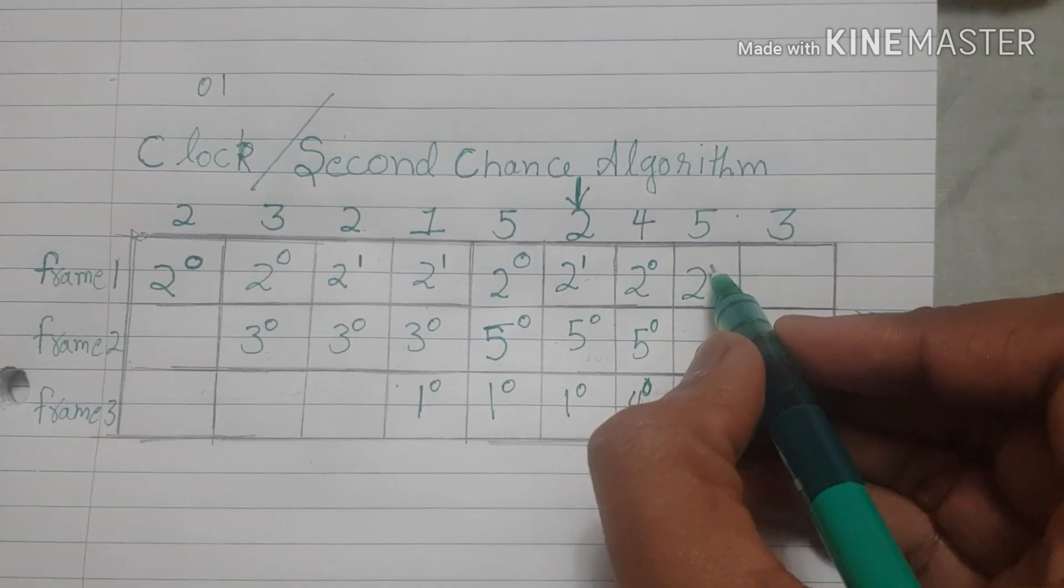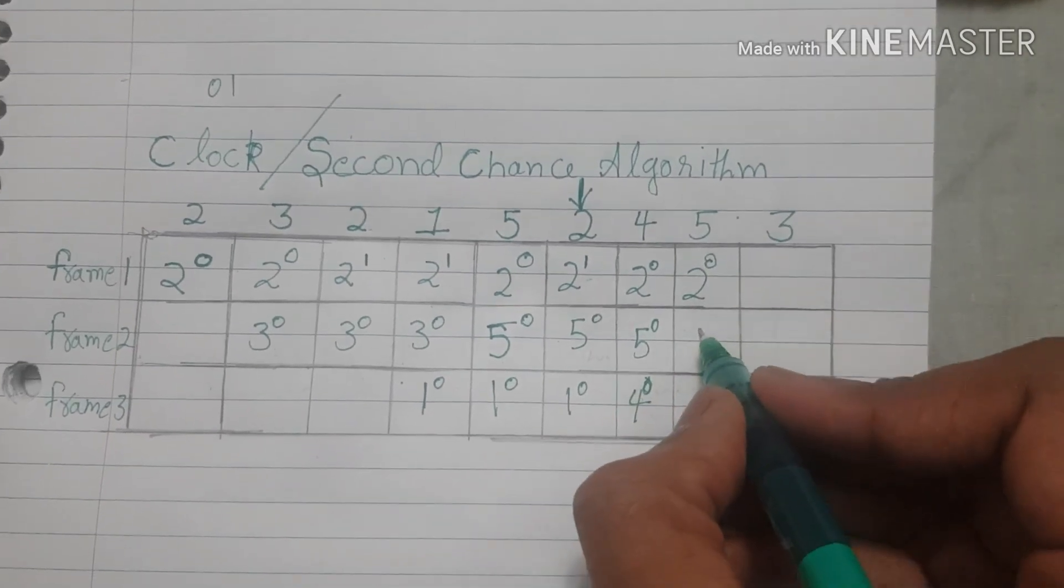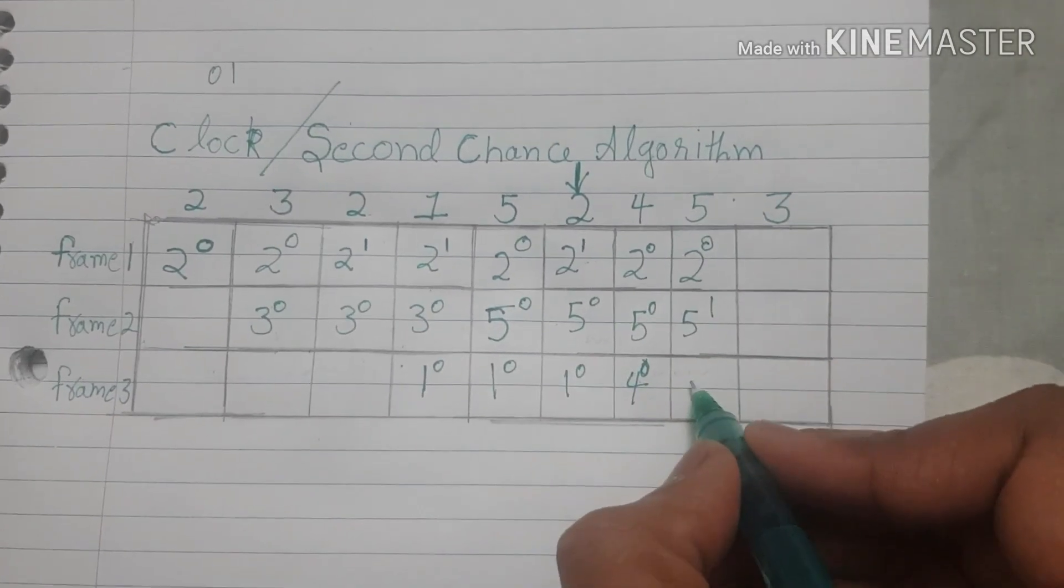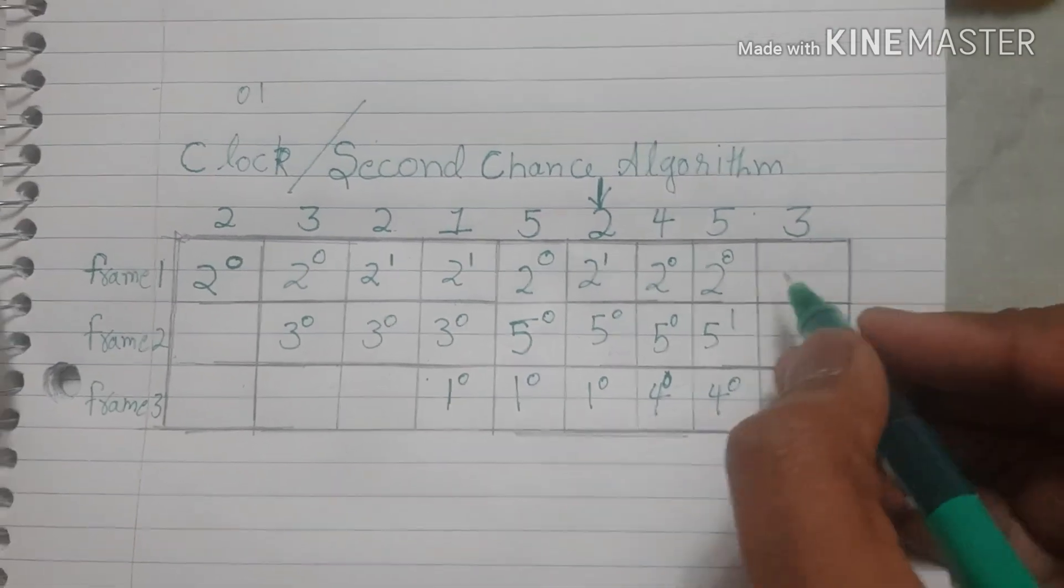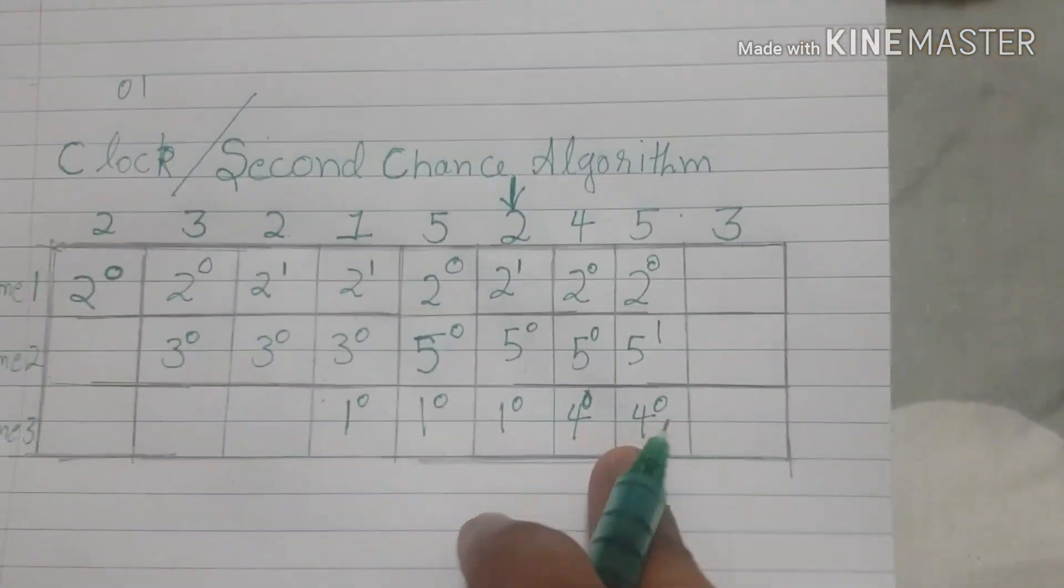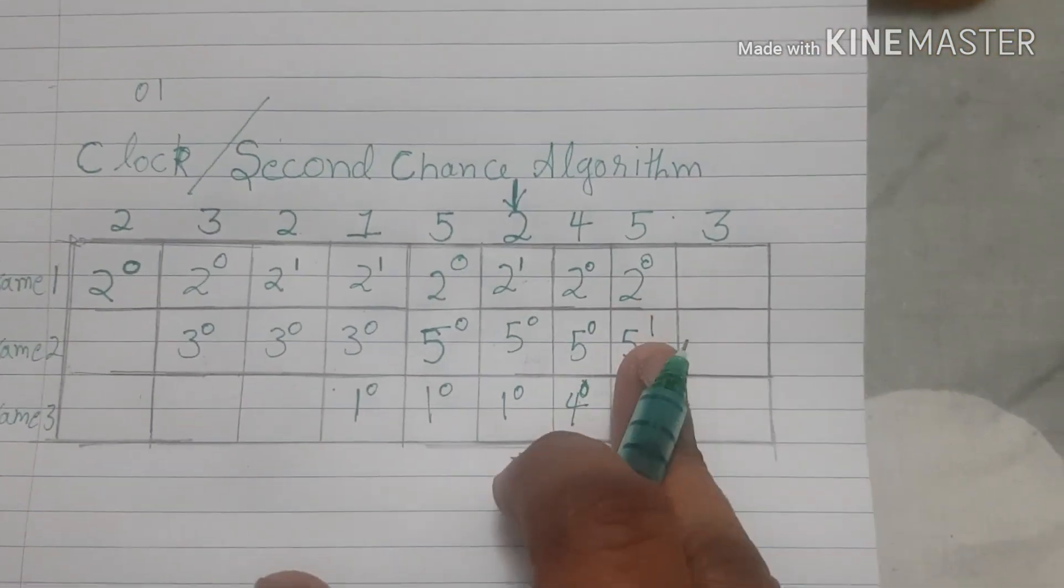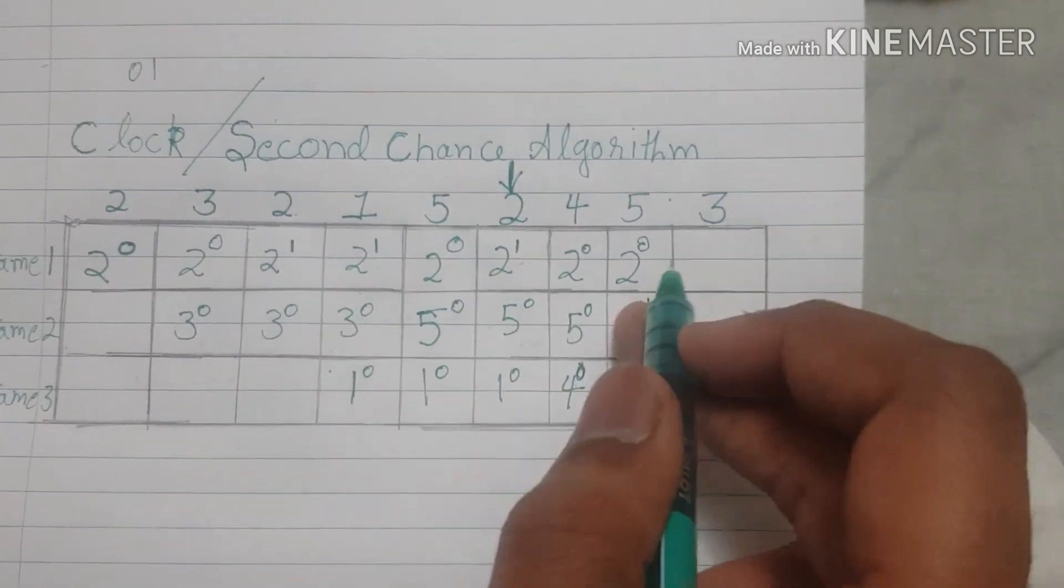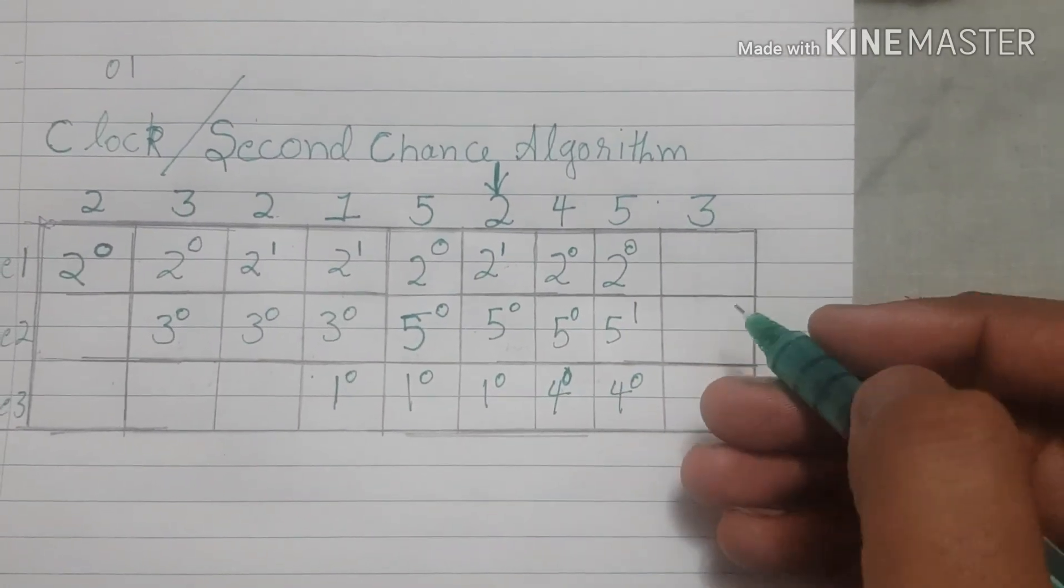Now we go to 5, 0, 1 and 0. So next time, so 4 just came in, 5 is 1.